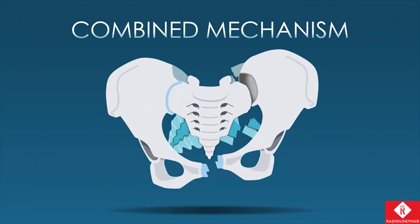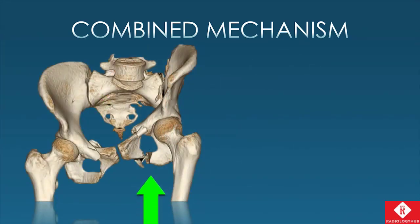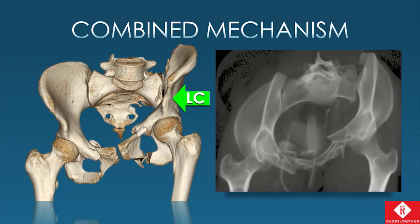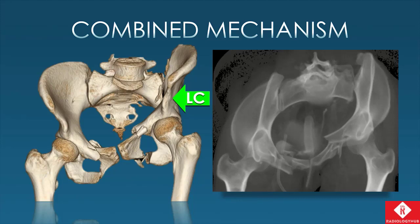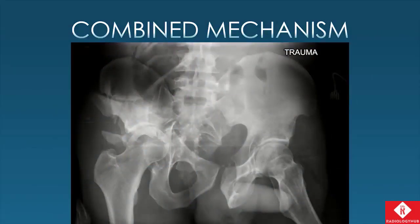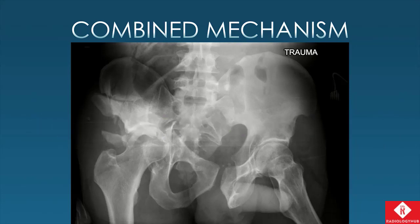The combined mechanism, as the name suggests, involves more than one dominant vector or really no dominant vector. These are typically reserved for co-dominant vectors — where you see features of vertical shear but also something that fits with another injury pattern, such as lateral compression. For example, there may be some vertical separation of one hemipelvis combined with lateral compression and internal rotation on the same side. On the inlet view, we can also see that there's an anterior-posterior compression force involved as well. Another example: lateral compression type 3 with windswept opening on the opposite side but also with vertical separation — this we would call a combined mechanism.